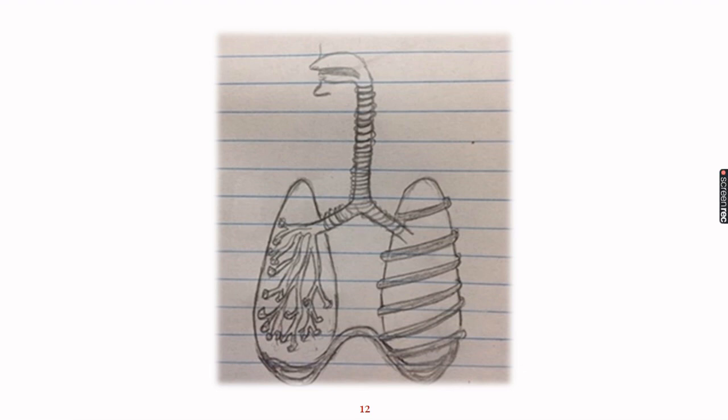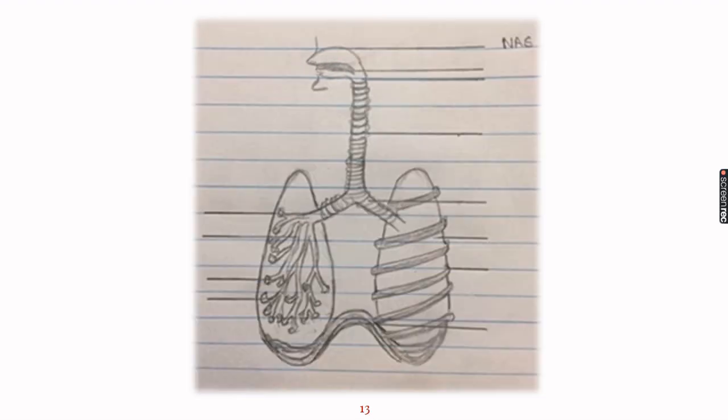And with this we have completed our diagram. Now the next important part of the diagram is its labelling. And I have told you earlier also that for the labelling we should first draw the horizontal lines which provide much neater look to the diagram. Preferably all the labelling should be done on the right hand side. But if there is any need we can do some labelling on the left side also. And labelling should be done in capital letters.